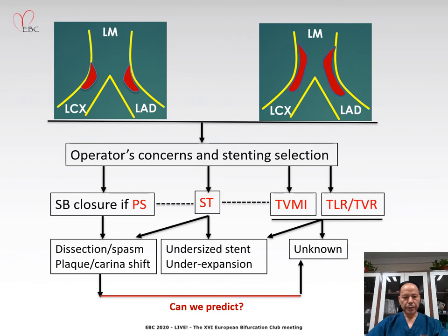During the procedure, operator concerns and stenting strategy selection are usually based on the prediction of side branch occlusion, stent thrombosis, and target vessel myocardial infarction. Dissection, plaque shift, and carina shift are major factors correlated with the presence of side branch occlusion after stenting the main vessel. Side stent thrombosis and stent under-expansion are two major reasons for the occurrence of stent thrombosis.